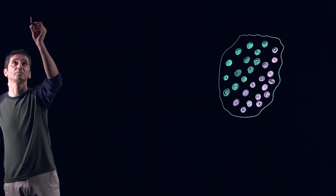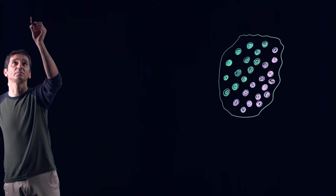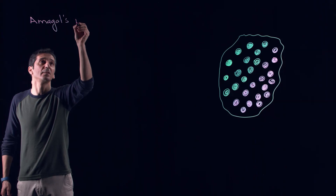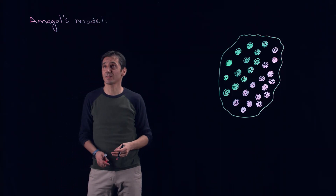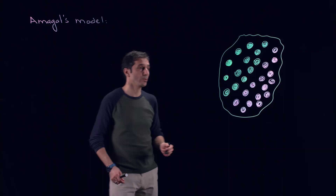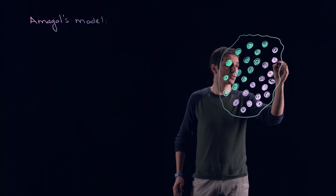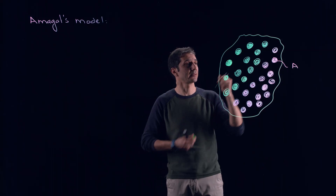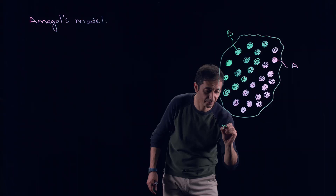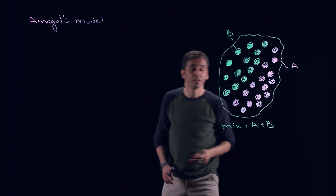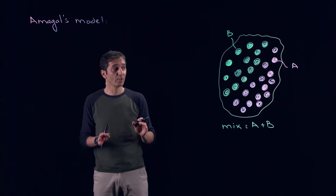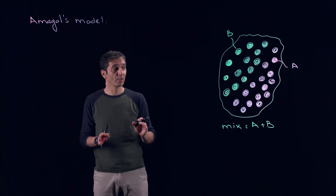Amagat's model is due to the French physicist Émile Amagat. The idea in Amagat's model is that if you have two different gases — let's call this one A and this one B — and there is a mixture of A and B, we consider that both gases A and B are at the same temperature and also the same pressure. However, they occupy different volumes.